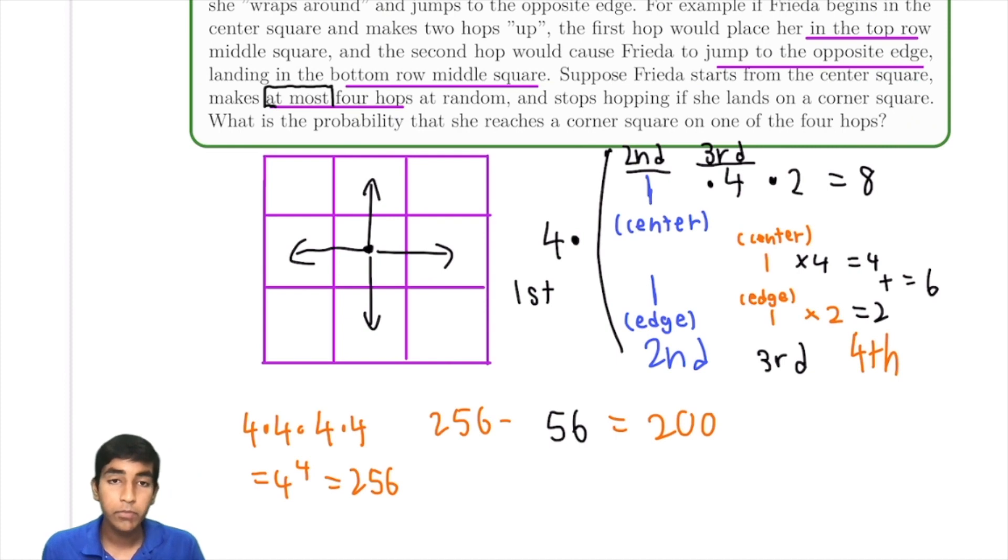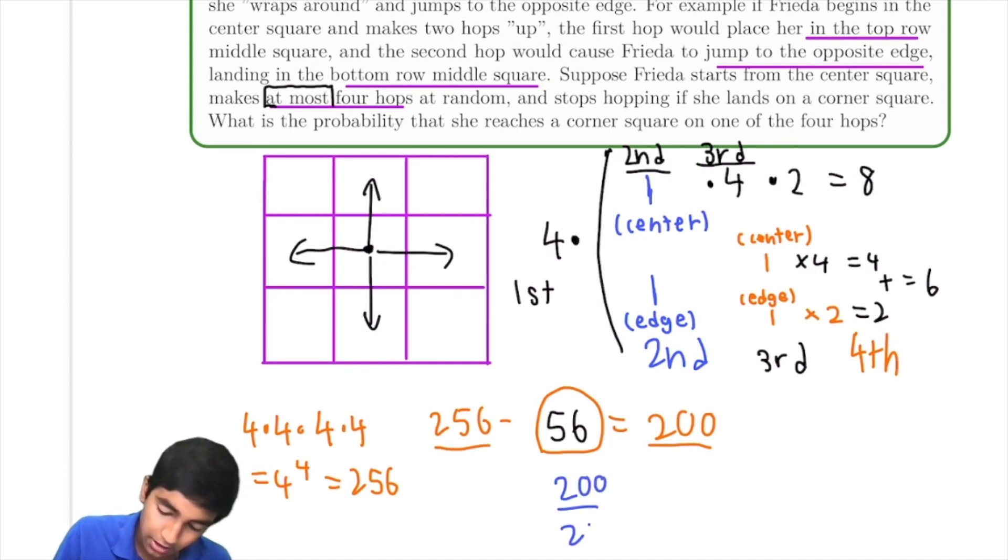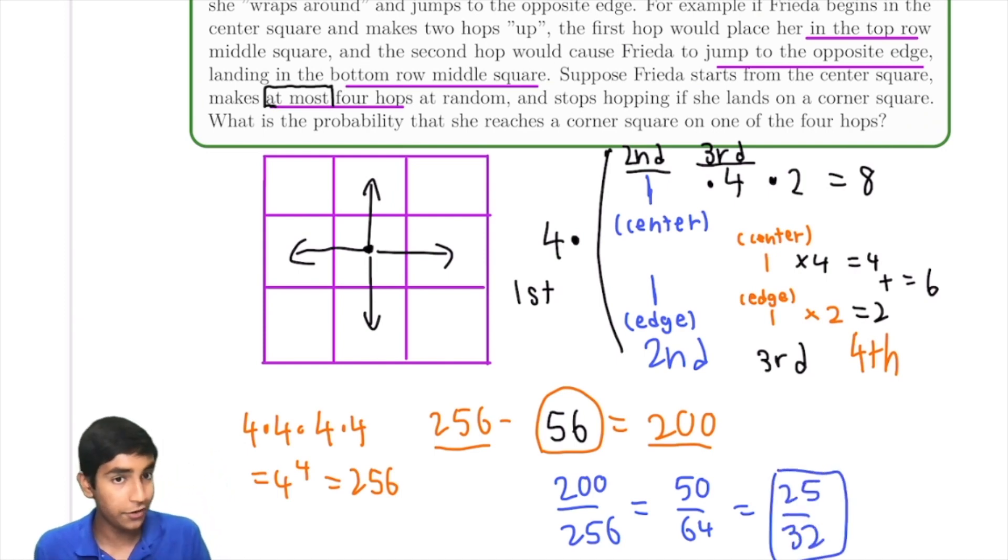And if 200 do work, and 256 total, the probability, remember, this is the number of ways to reach a corner square on any of the moves. So the probability is just 200 over 256, which is 50 over 64, dividing by 4, which is 25 over 32. And that is how we solve this problem, one way at least. In a future video, there's another way to solve this problem.